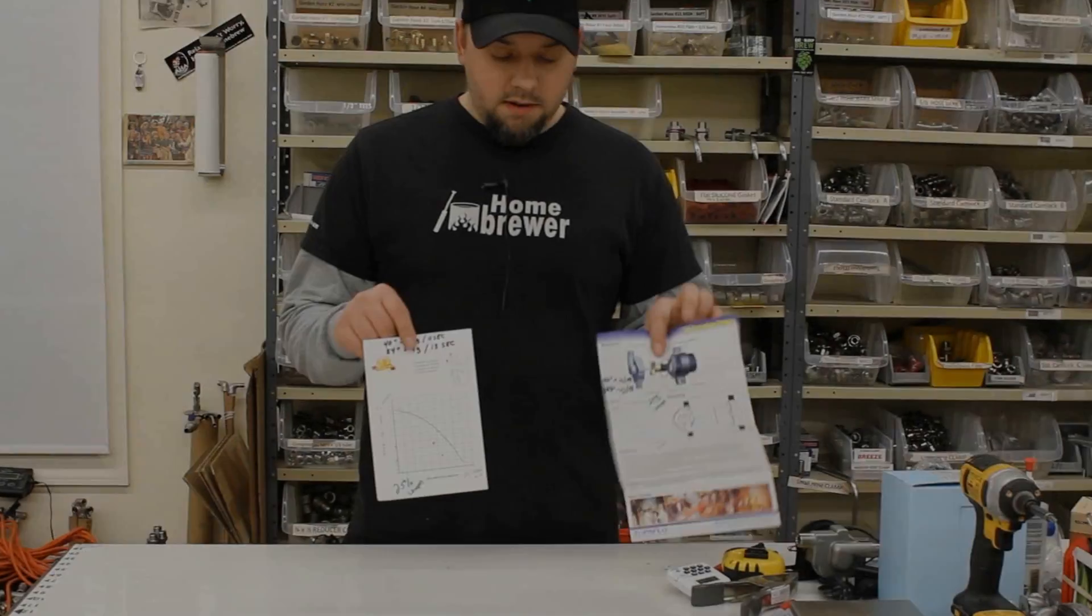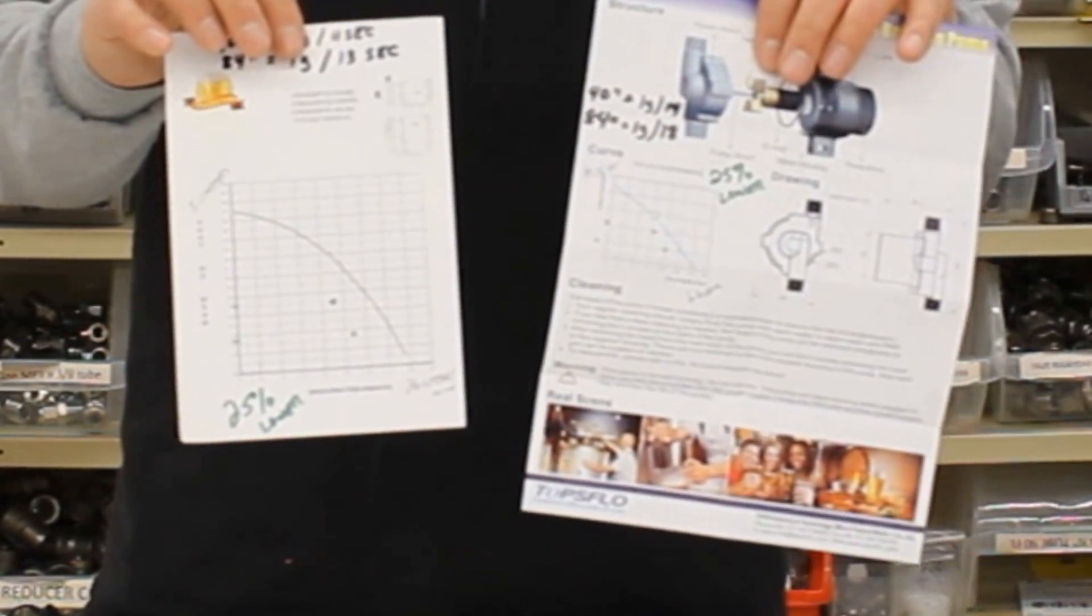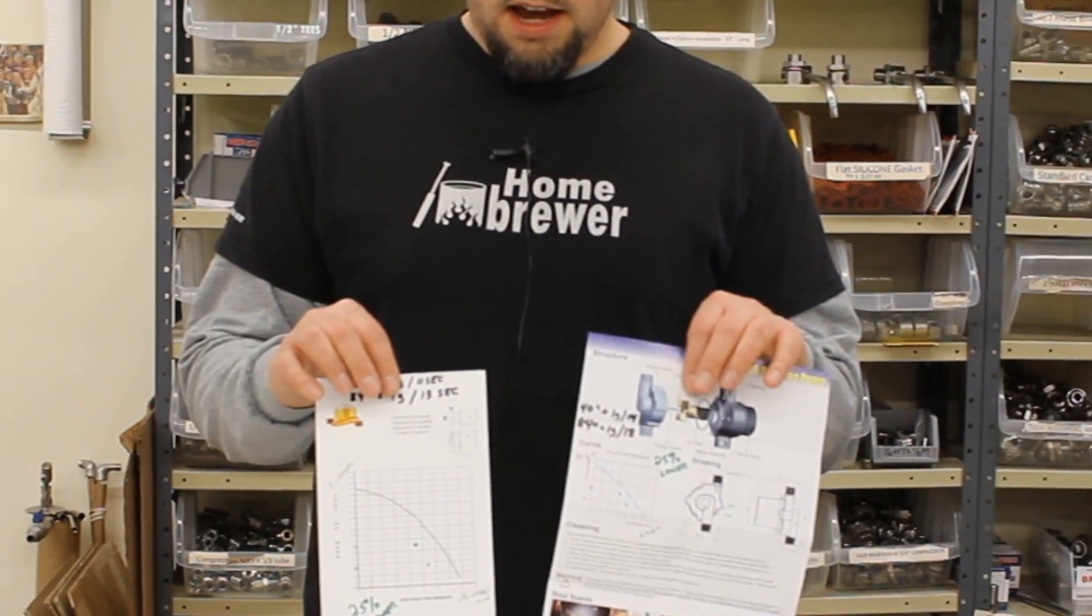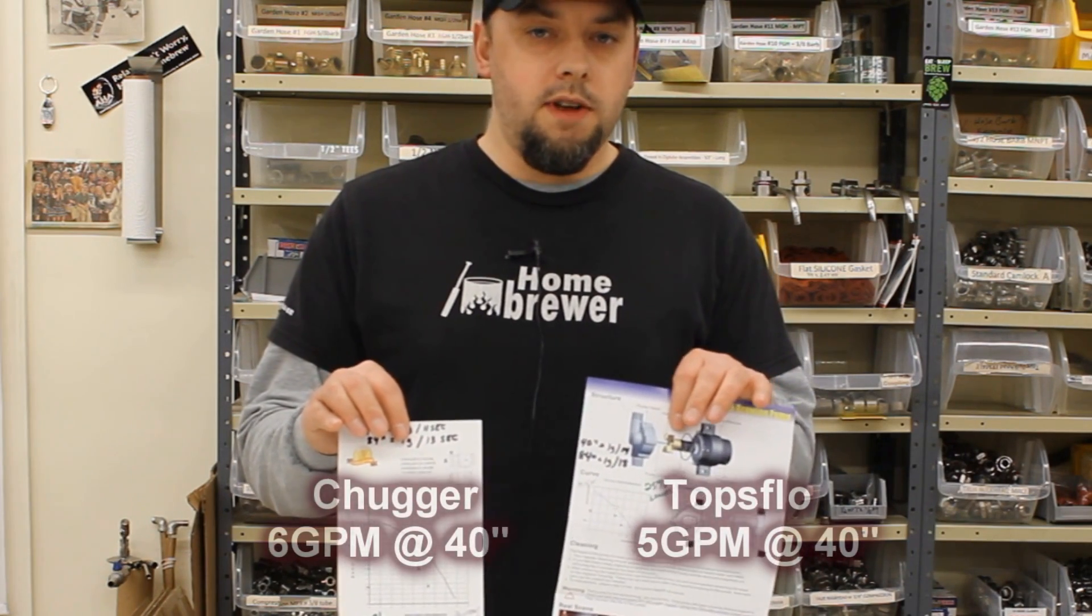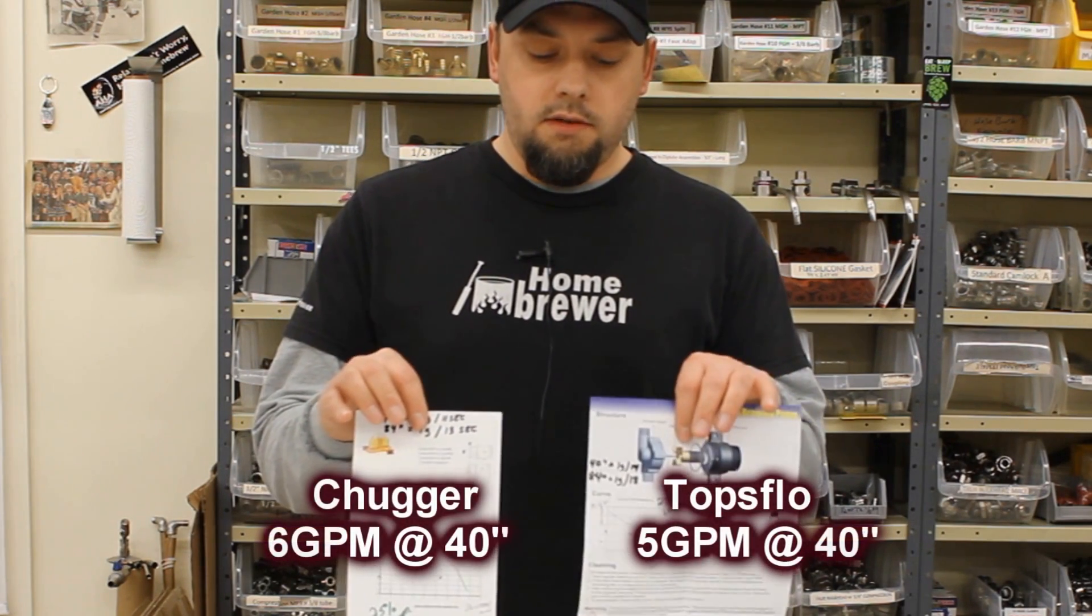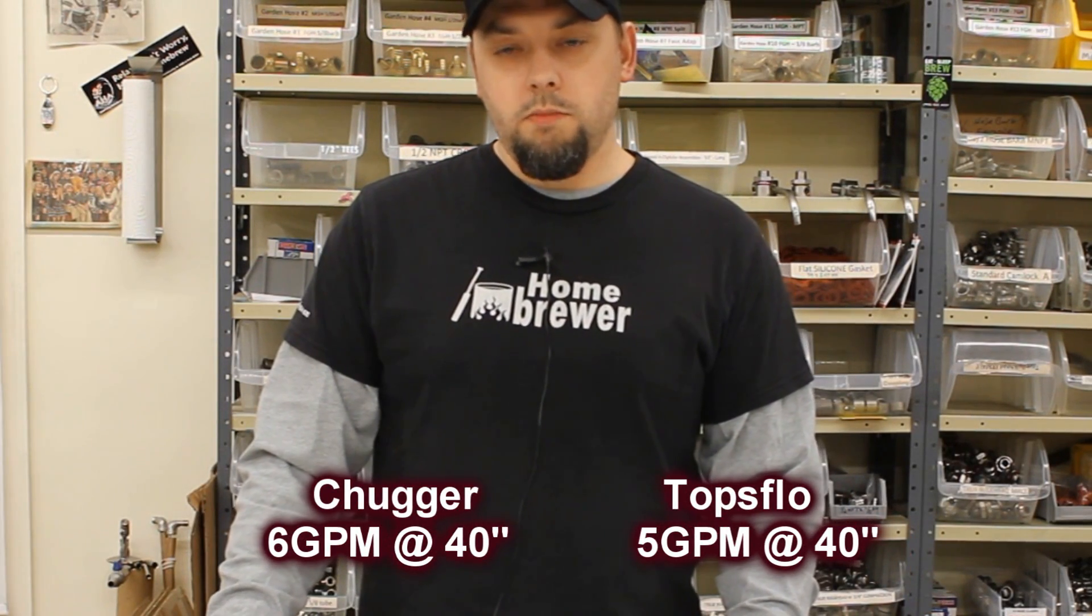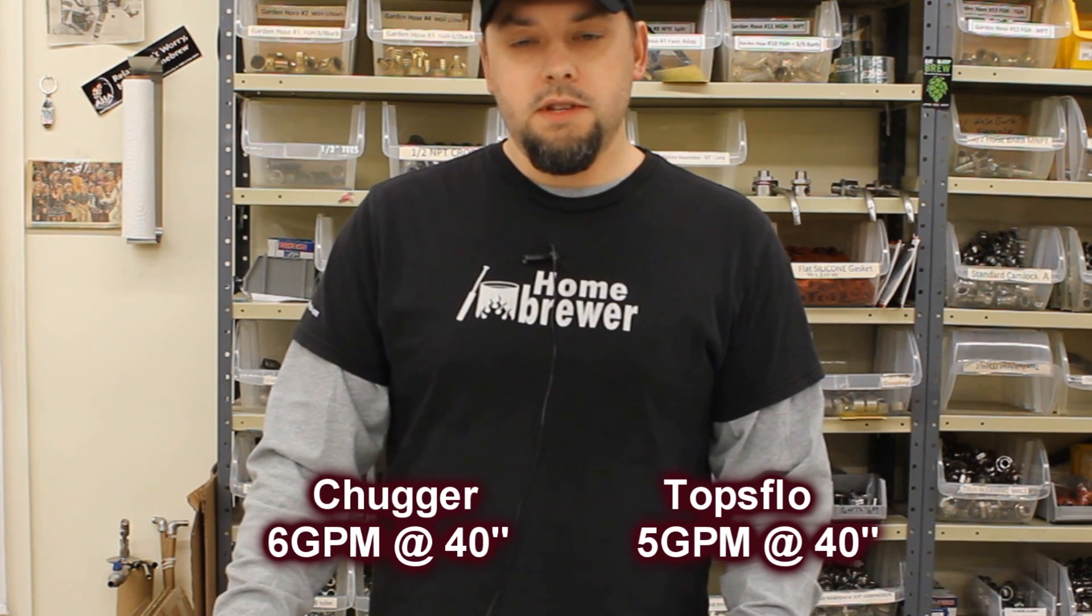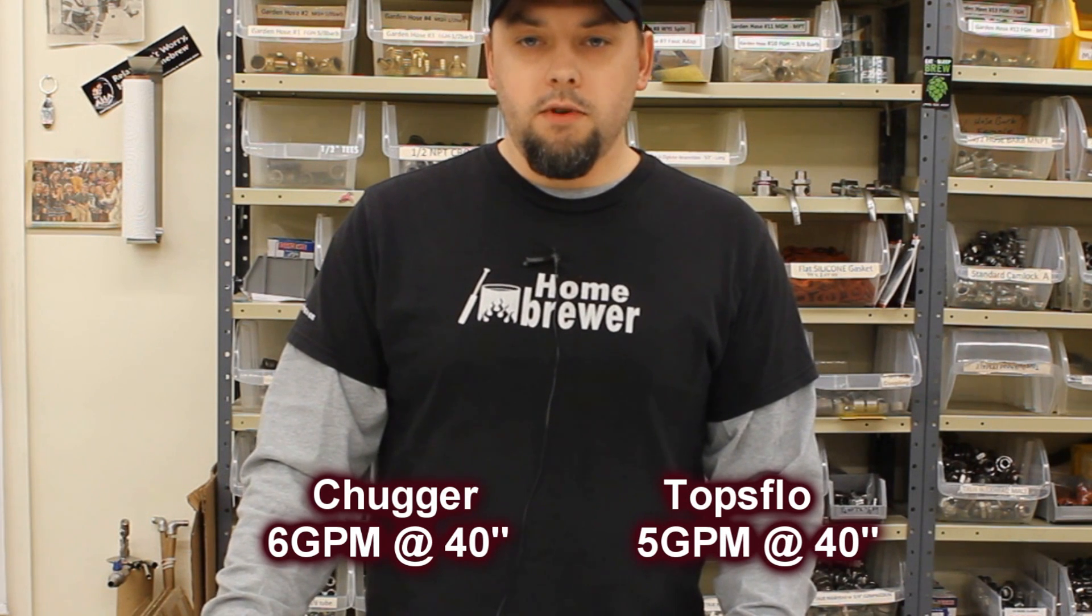The manufacturers publish a graph on the literature that describes the flow rate decrease as the head increases. Both of these actually perform 25 percent slower than the graph suggests. Nevertheless, both of the pumps are good performers. They will both whirlpool probably up to 10 gallons of work, no problem. If you're looking for absolute maximum flow rate and performance, the Chugger pump still wins obviously.